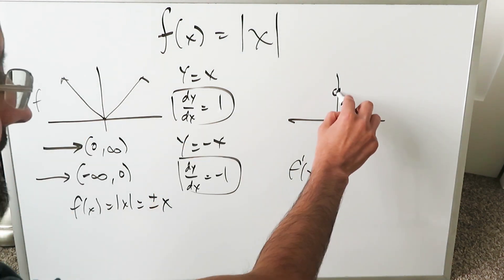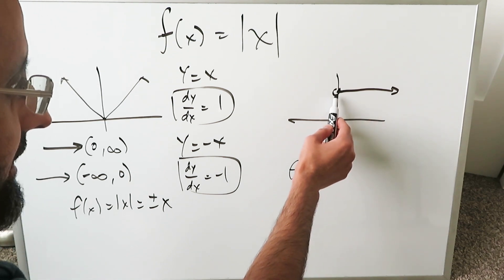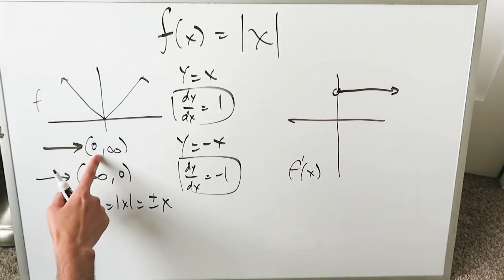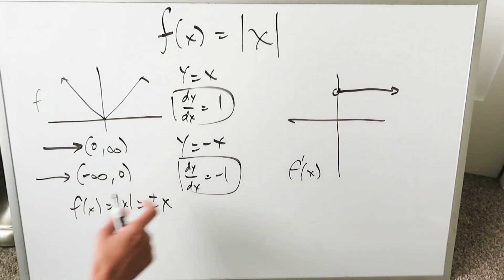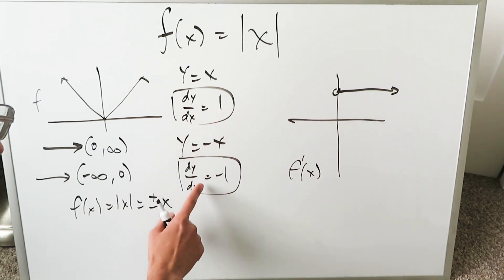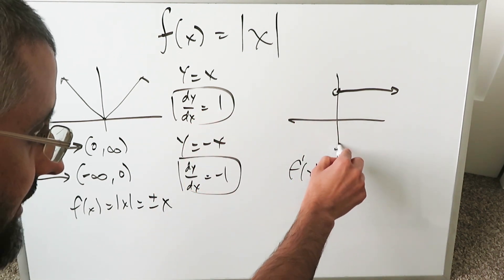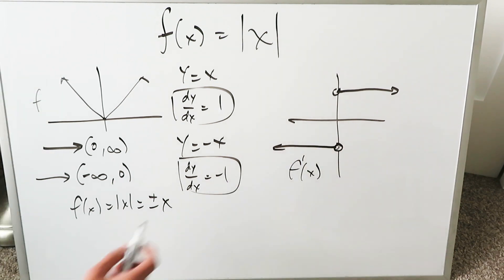When you're looking at this, you have a graph which shows here. Again, 0 is not included because we never include it in this domain. dy/dx equals 1, that's the graph over there. dy/dx equals minus 1, that's this graph over here, going right over here.